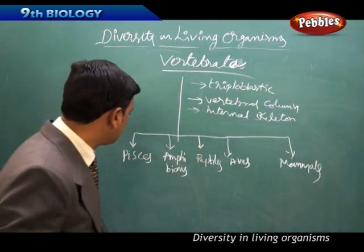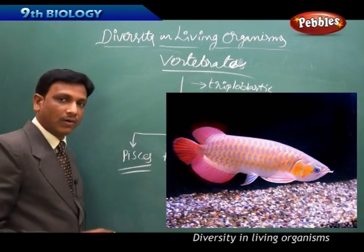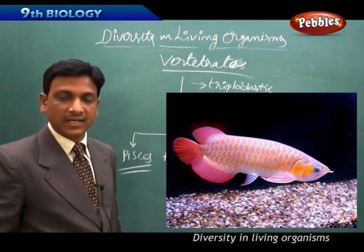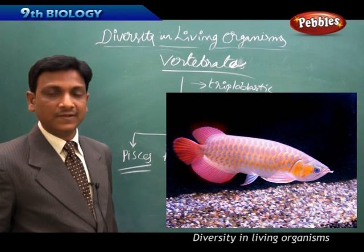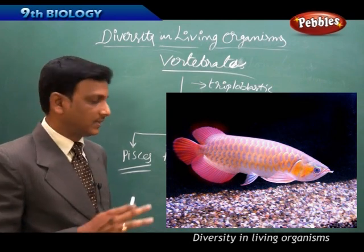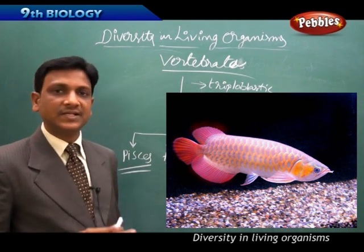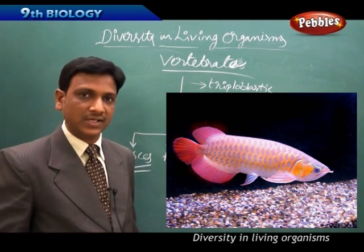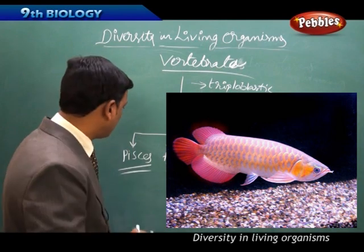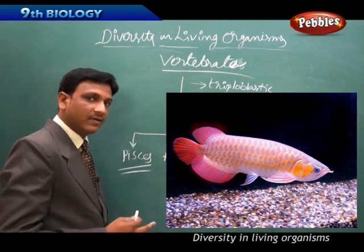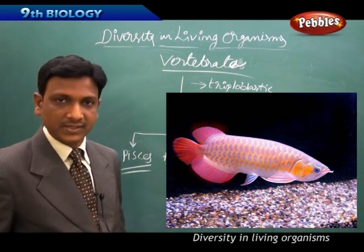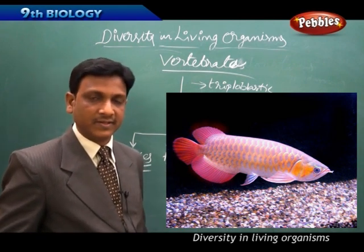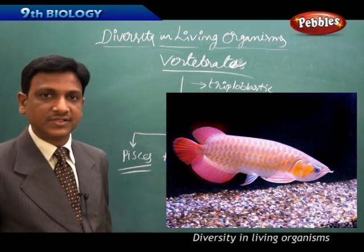Pisces includes all fishes. They have gills for breathing and a two-chambered heart. Fishes are cold-blooded — they can change their blood temperature according to the environment. They have gills to breathe and a bony endoskeleton, except in some sharks and certain other fishes.